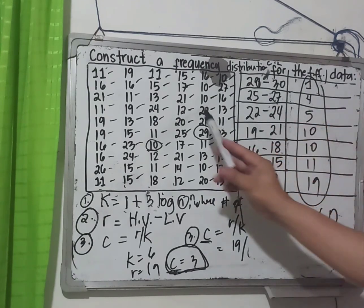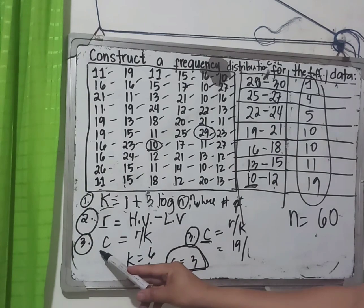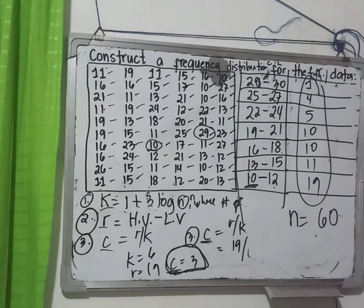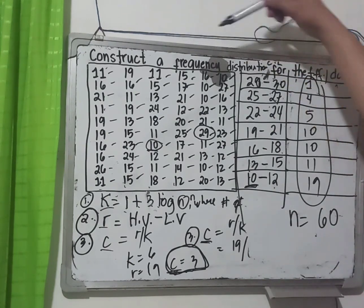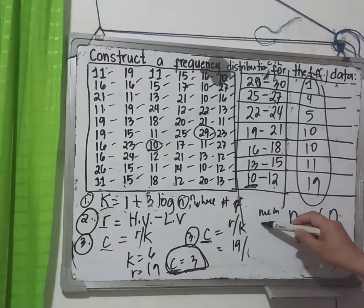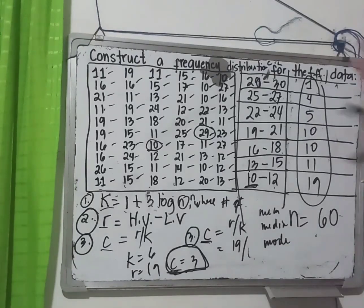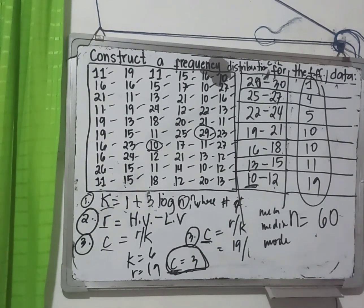To summarize: based on the data, we found the value of k (number of classes), value of r (range), and value of c (class size), then built the frequency distribution table. In the next video, we will find the value of mean, median, and mode based on this frequency distribution table. Thank you.